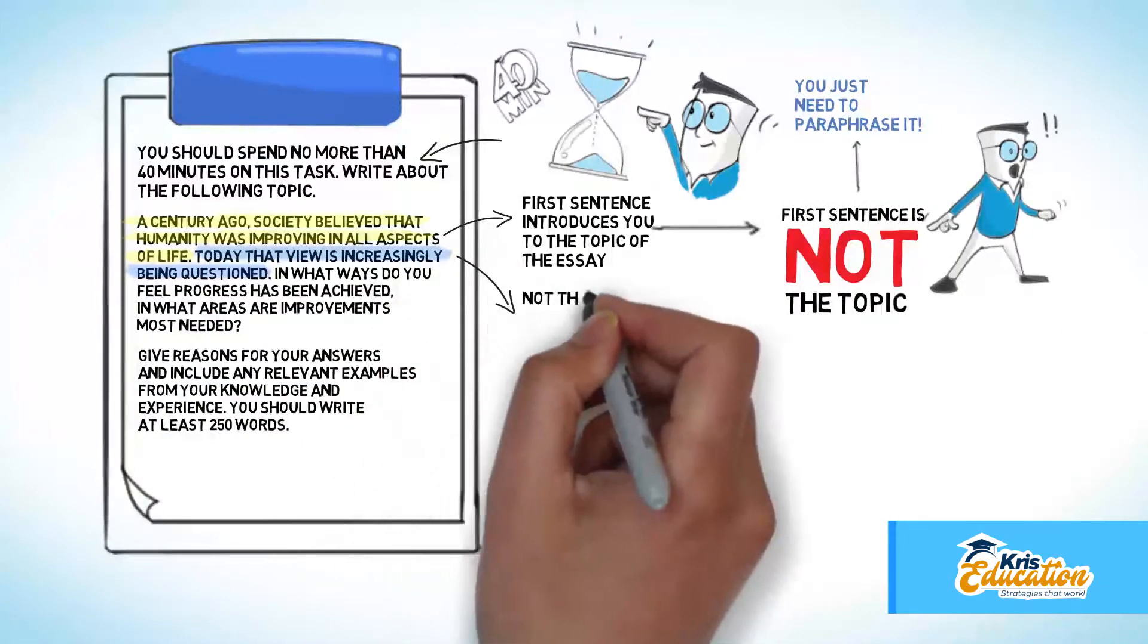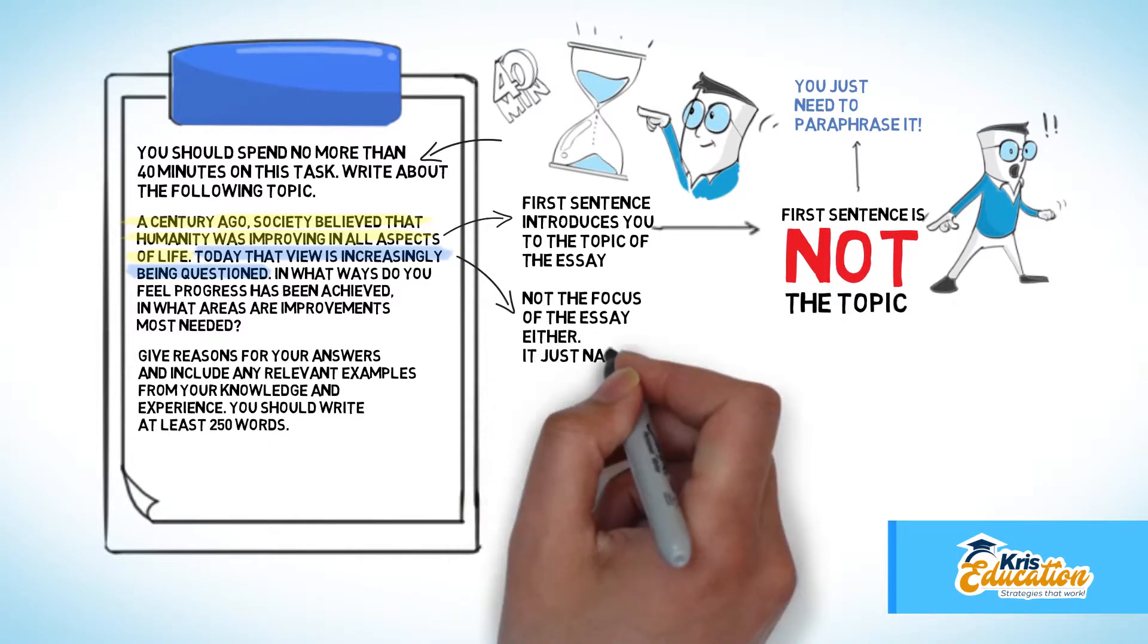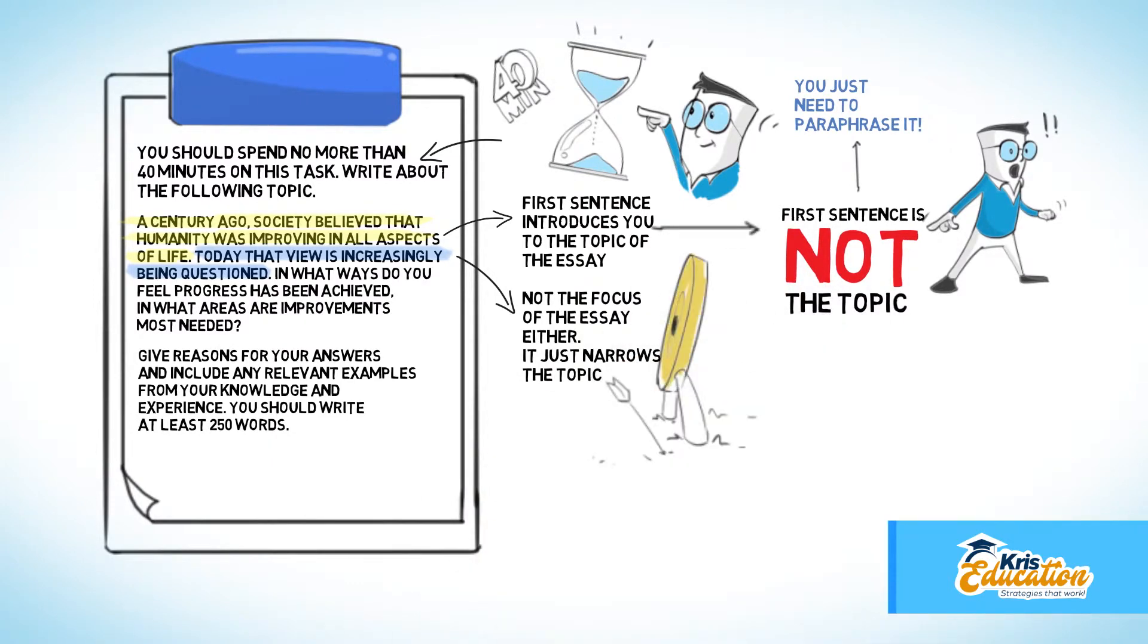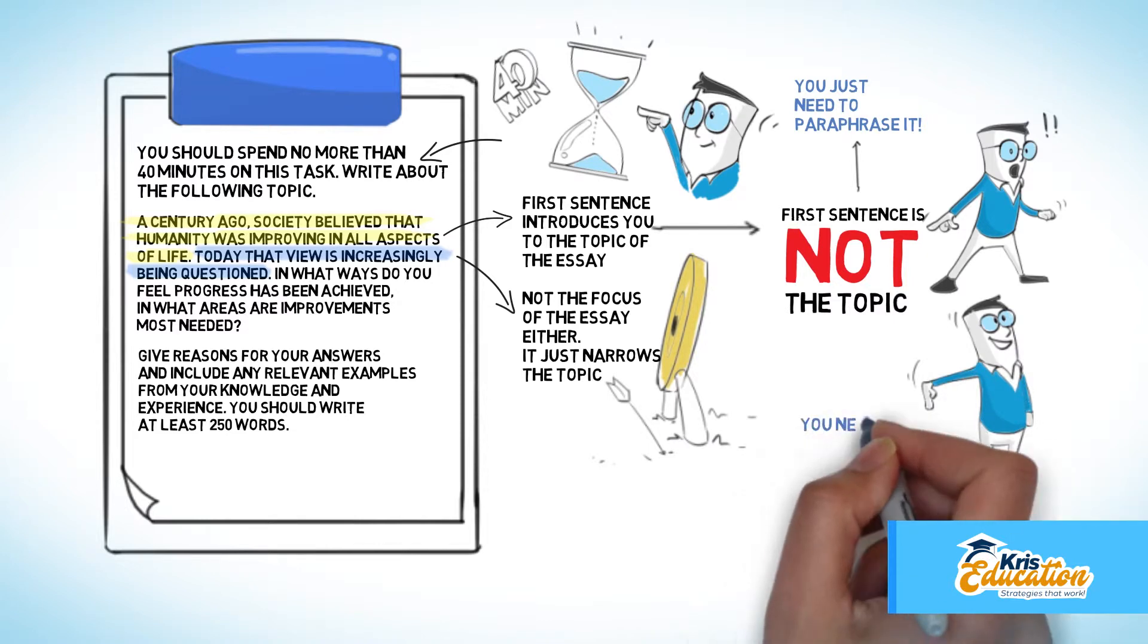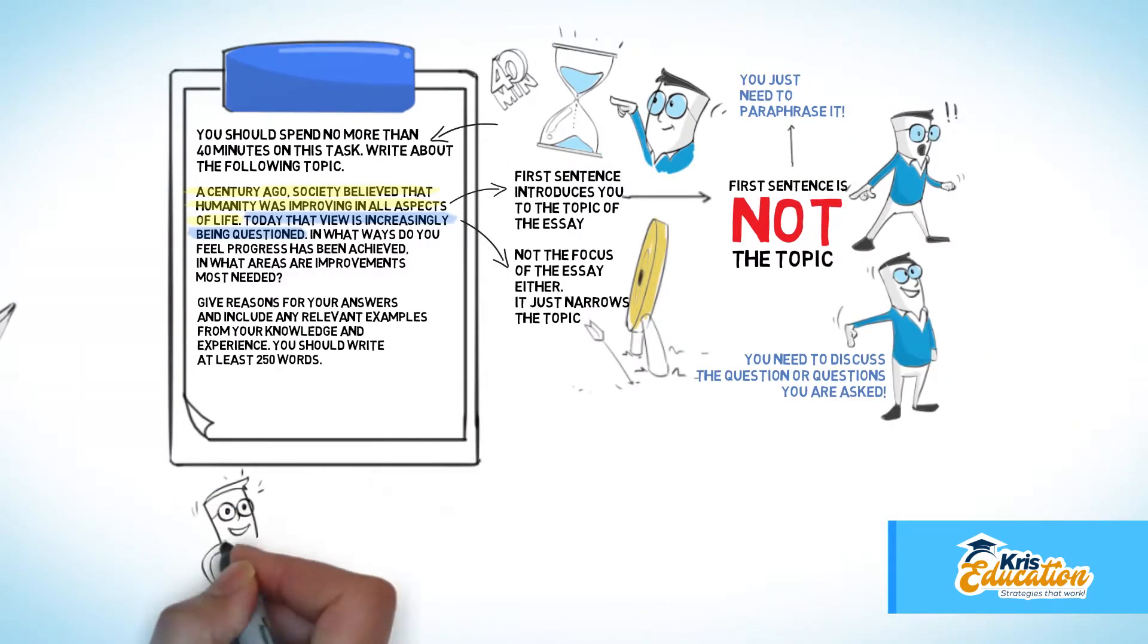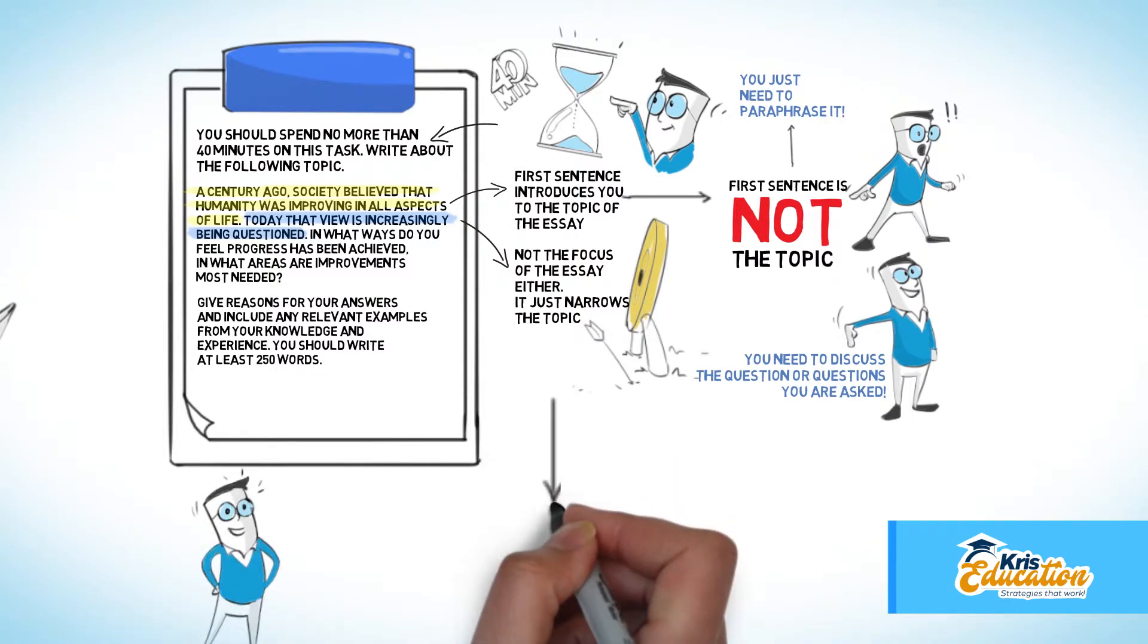The second sentence of an IELTS question narrows the topic. This sentence is not the focus of the essay either. In your essay you need to discuss the question or questions you are asked. In this case, your essay should answer two main questions.